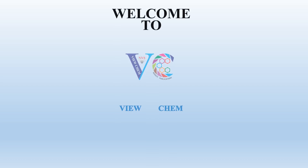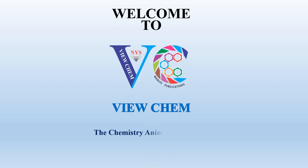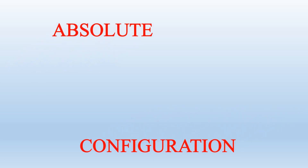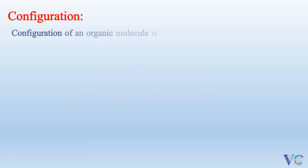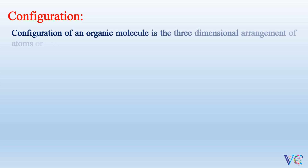Welcome to ViewChem, the Chemistry Animations Channel. Absolute Configuration. Configuration of an organic molecule is the three-dimensional arrangement of atoms or group of atoms.